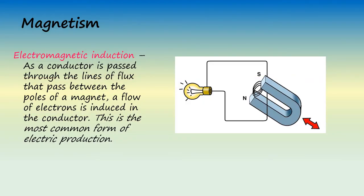In a process called electromagnetic induction, as a conductor is passed through the lines of flux that pass between the poles of the magnet, a flow of electrons is induced in the conductor. This is the most common form of electric production. The alternators and generators in our automobiles and aircraft generate electricity based upon this principle. The bulk of the electricity used in our homes, hospitals, schools, offices, etc. is generated by electromagnetic induction. Huge steam-powered generating plants powered by coal, natural gas, or nuclear fuel, as well as hydroelectric generating plants, supply most of the world's electrical needs through the process of electromagnetic induction.